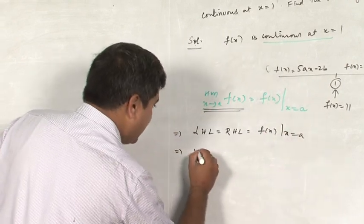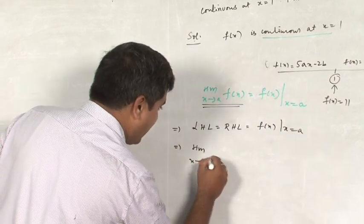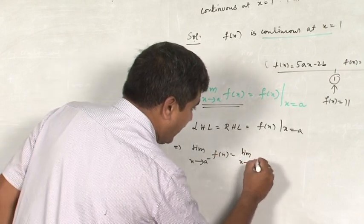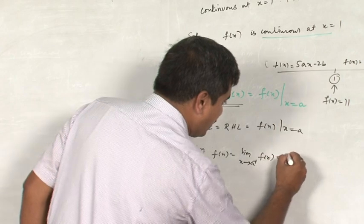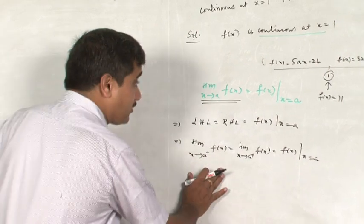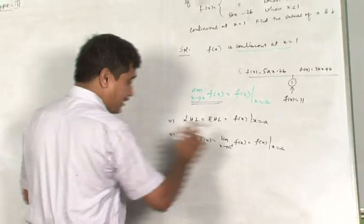Further I write this is limit x tends to a minus f of x is equal to limit x tends to a plus f of x is equal to f of x at x is equal to a. So you have to calculate this problem in this format only.